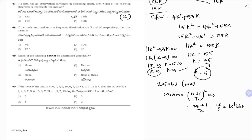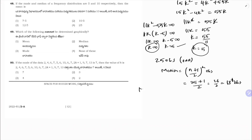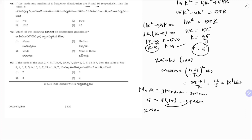If the mode and median of a frequency distribution are 5 and 10, find the mean. Using the empirical relation: mode = 3·median − 2·mean. So 5 = 3×10 − 2·mean, giving 2·mean = 30 − 5 = 25, so mean = 12.5. Correct option is 3.